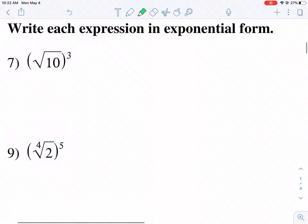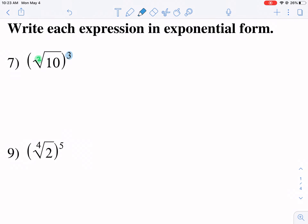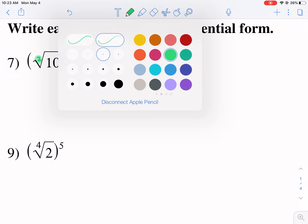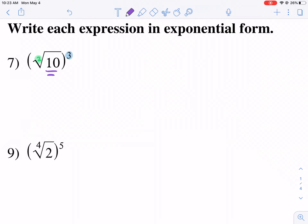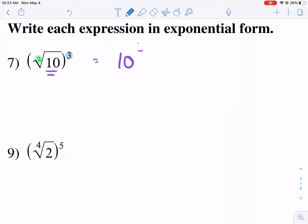So what we need to do here is we need to identify our root and our power. So there's our index of our root. There's nothing written, so it's an implied two. So we can go ahead and write two in there. And then we need to identify our power, and that is three. Our base needs to stay the same. So let's identify our base. Our base is 10. So now we can write this as 10. And what is the power? The power is three. And then the root has an index of two. There's our answer.